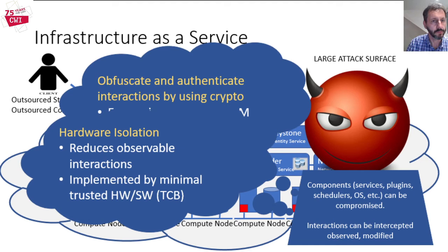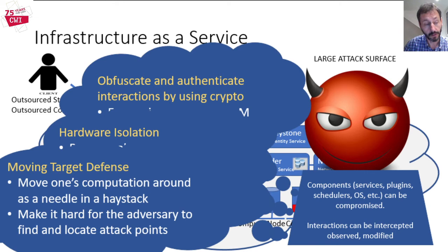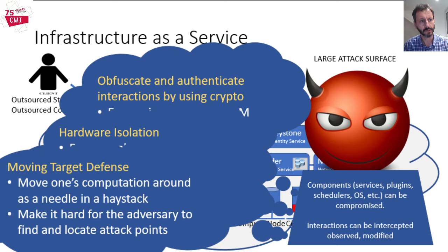Crypto and hardware isolation are two powerful techniques for providing security guarantees. But there exists an interesting third possibility which is still open-ended — it is as yet unclear how it can be used in general and effective ways. One may be able to implement a moving target defense strategy to make it hard for the adversary to find and locate attack points in the first place. The main idea is to ideally move one's computation around as a needle in a haystack, assuming some restrictions on how an adversary can search the haystack — for example, a limited monetary budget for buying access to a data center where the needle is moving around.